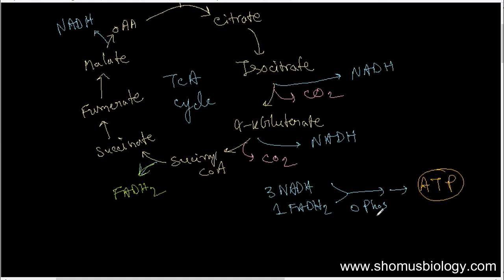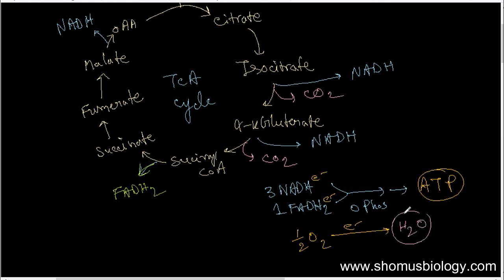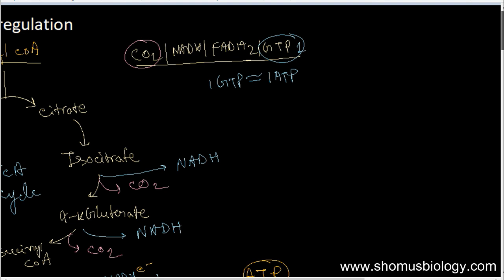NADH and FADH2 act as electron carriers — they donate electrons to electron carriers present in the inner mitochondrial membrane. Finally, electrons are passed to oxygen, which is the terminal electron acceptor for oxidative phosphorylation. Oxygen is reduced to water, and this is how water is produced — as a result of oxidative phosphorylation, not directly from the TCA cycle itself.